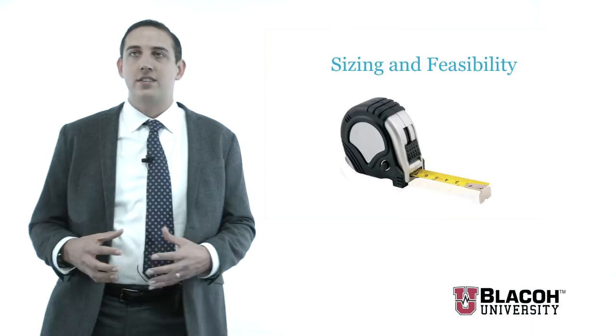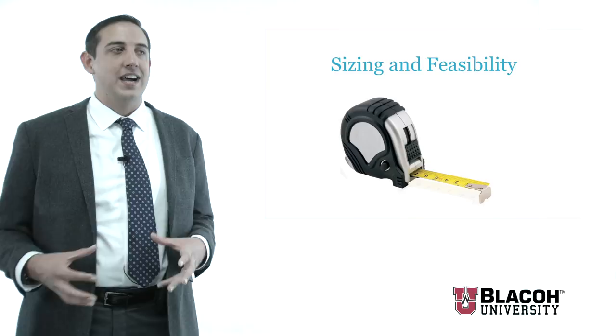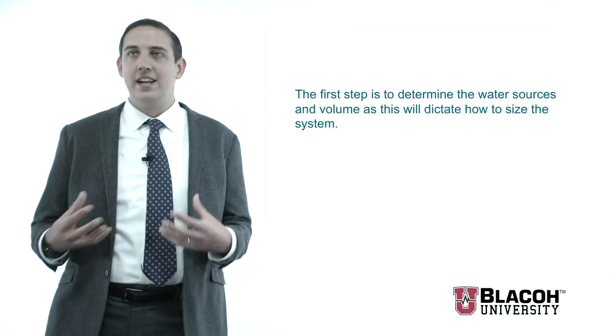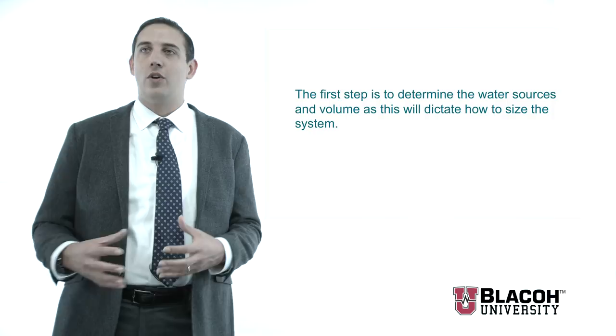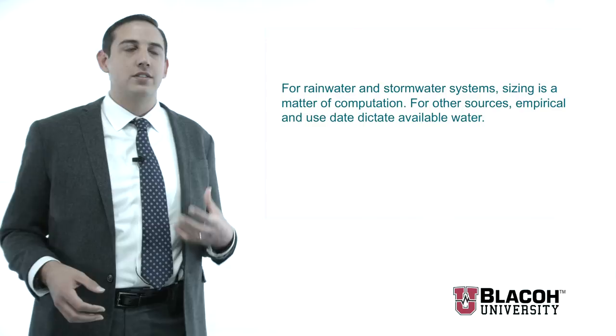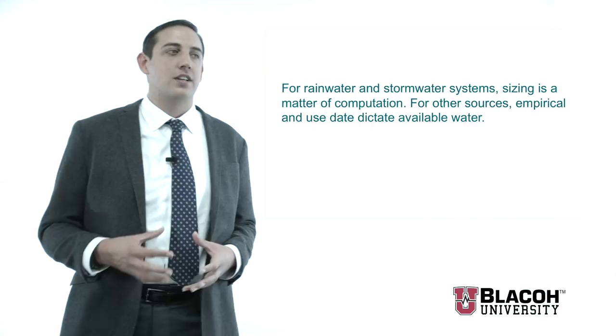What we're going to focus on in the rest of this session is the sizing and feasibility of these systems. Just because you can do a rainwater or stormwater harvesting system doesn't mean you always should — feasibility certainly needs to be looked at. The first step in designing a system is understanding what your water sources are going to be, whether it's stormwater, rainwater, or gray water, and also what you're going to be using the water for. For rain and stormwater, sizing is a matter of computation. For all other sources, it's based on empirical data.